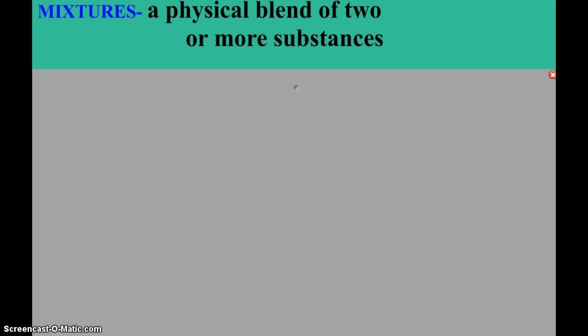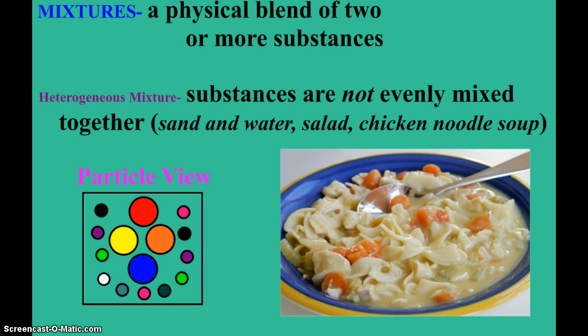And so there's two types of mixtures, heterogeneous and homogeneous. Heterogeneous mixtures are when we have uneven distribution. The substances are not evenly mixed. You see here a particle view, you've got big things surrounded by little things in different colors. These aren't very common in chemistry, but like in life, here you see a bowl of chicken noodle soup. Perhaps one spoonful you get some noodles, another spoonful you get a carrot.